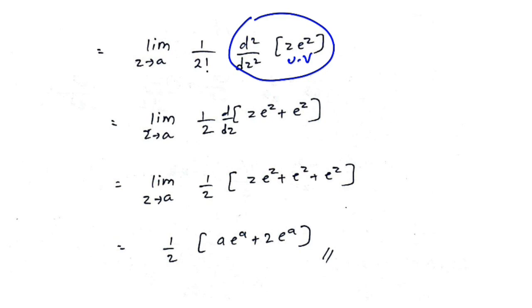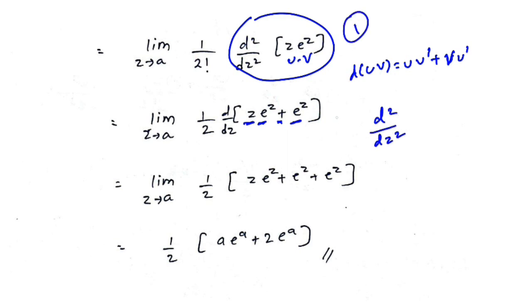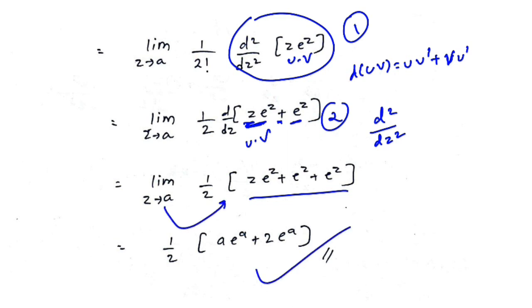Using the product rule, u equals z and v equals e raised to z: first derivative is z times e raised to z plus e raised to z. Taking the second derivative again using the product rule on each term gives z times e raised to z plus e raised to z plus e raised to z.